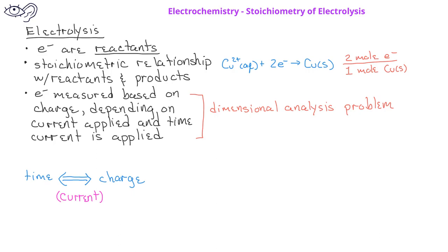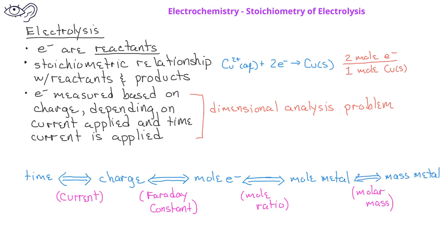We can then use the Faraday constant to identify the moles of electrons involved, and use the stoichiometry between the electrons and the reactants or products to figure out the moles of the metal produced. Then we can use the molar mass of the metal to figure out the mass of the metal produced.